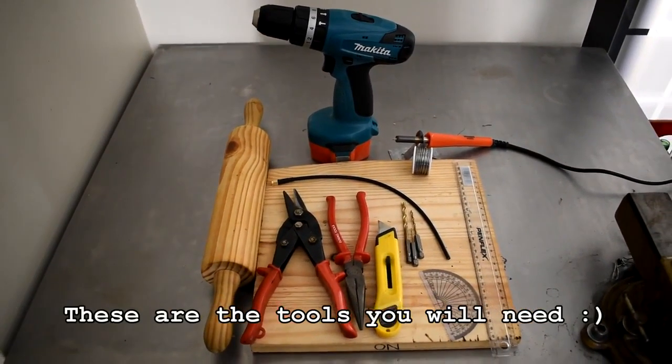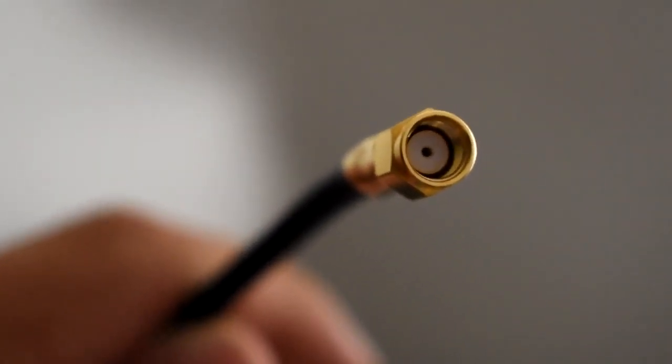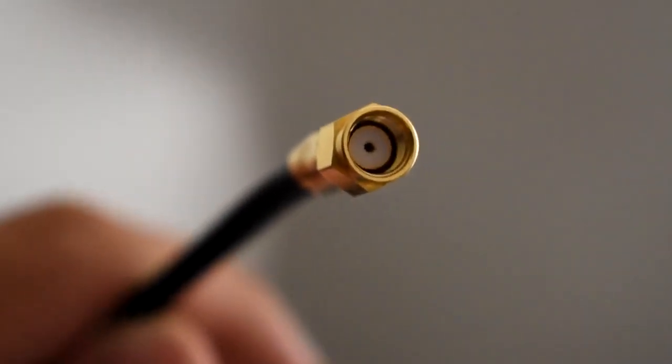The sizes of the drill bits are 2, 4, and 6 mm. The coaxial cable is an RG58 with an SMA female connector.